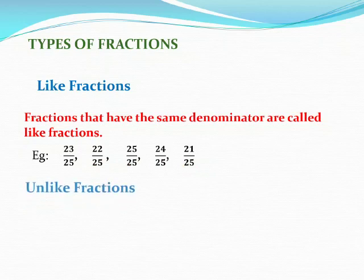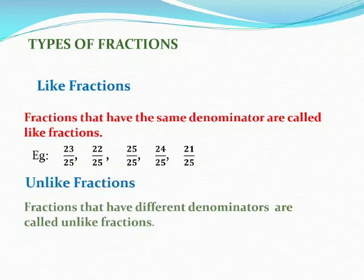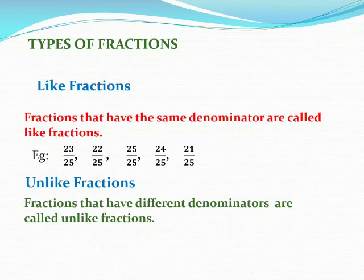Next, unlike fractions. What are unlike fractions? Fractions that have different denominators are called unlike fractions. For example, 5 by 10, 3 by 17, 6 by 8, 3 by 9. Here you can see all these denominators are different. So in like fractions, denominators are same. In unlike fractions, denominators are different.